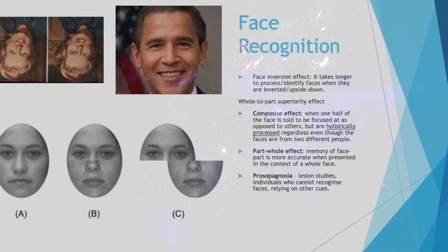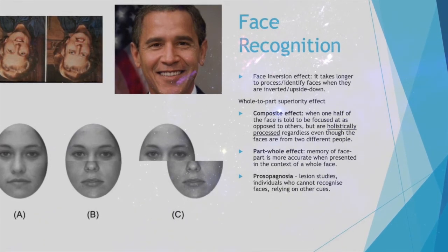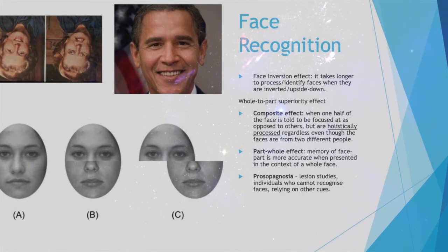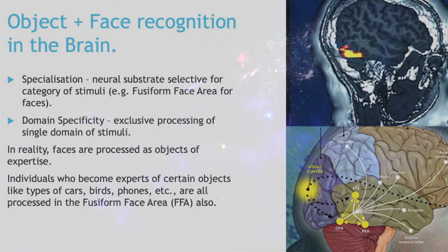Prosopagnosia. From lesion studies, it was found that there are individuals who have prosopagnosia, whereby they cannot recognize faces and have to rely on other cues like hairstyle, clothing, etc. This relates to objects and face recognition in the brain.